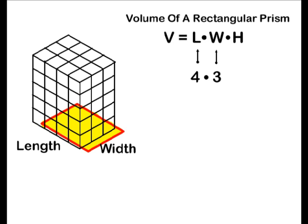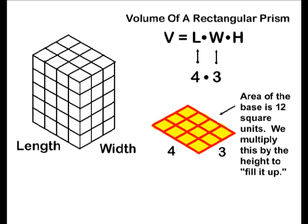We can clearly see when multiplying the length times the width of the rectangular prism, we come up with 12 square units, which would be the area of the rectangular prism's base.